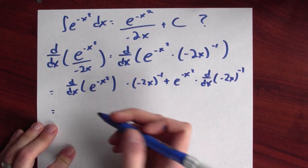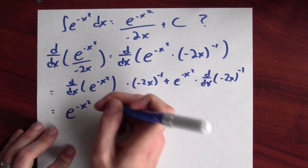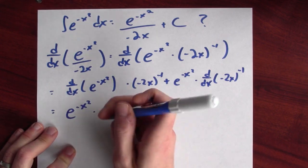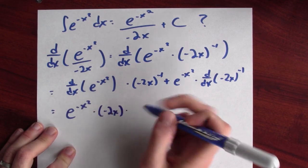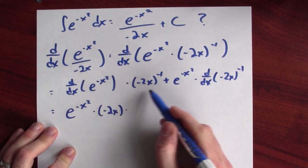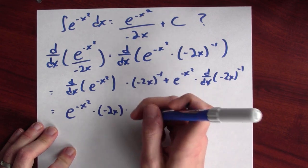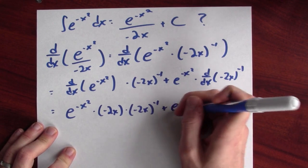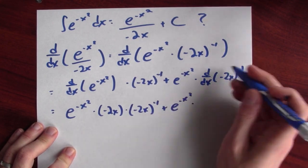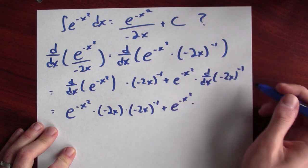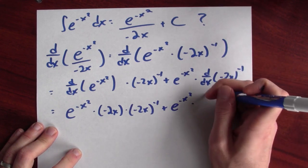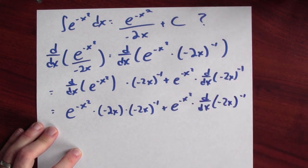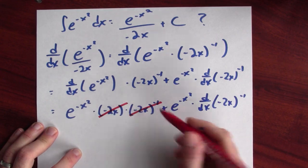What's the derivative of e to the minus x squared? That's e to the minus x squared, because the derivative of e to the [something] is e to the [something] times the derivative of minus x squared, which is minus 2x. And then it's times negative 2x to the negative first power. Plus e to the minus x squared times the derivative of minus 2x to the minus first power. This is pretty exciting right here — this term cancels, this term cancels.